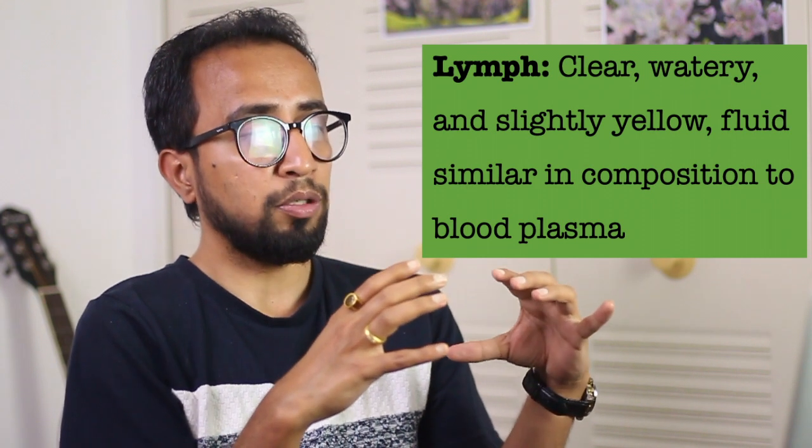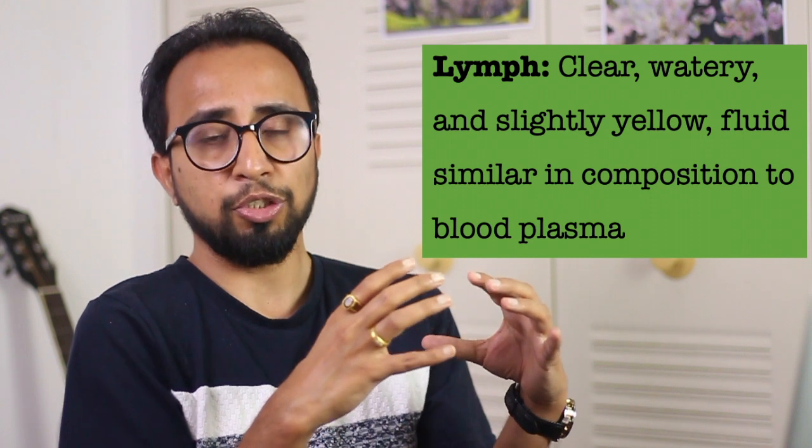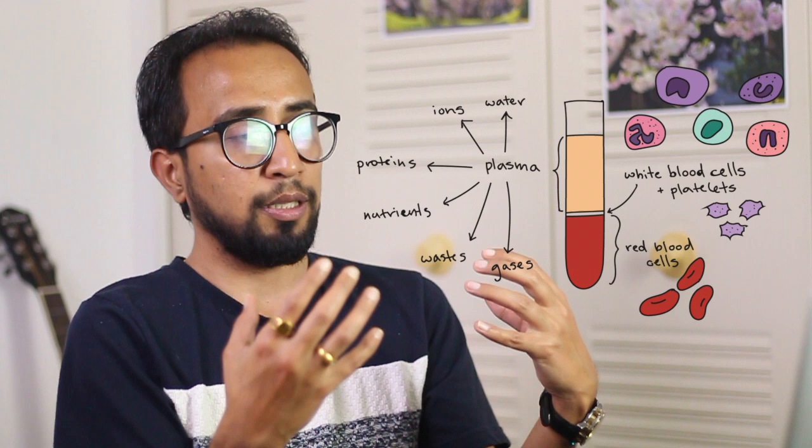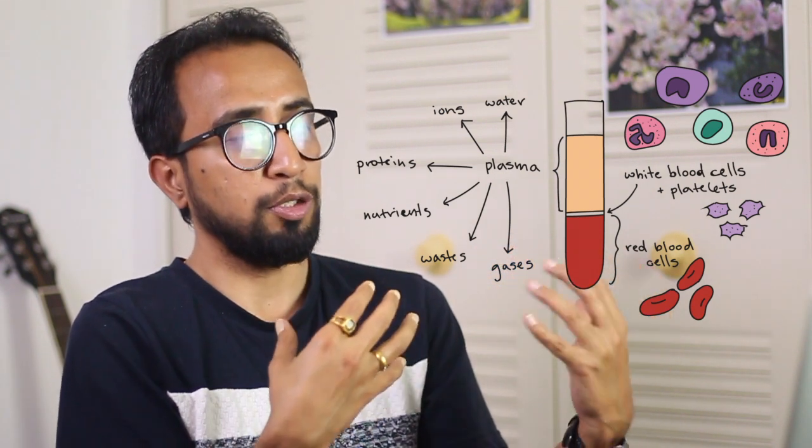Now let's talk about the components of the lymphatic system. Number one is lymph — a clear, watery, slightly yellowish fluid similar in composition to blood plasma. However, the lymph present in the intestine immediately after eating is milky white in color. All other lymph throughout the body is clear and watery. Its composition is similar to blood plasma, containing water, ions, different proteins, nutrients, waste, and gas molecules.